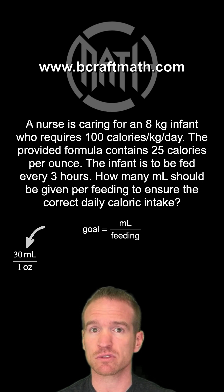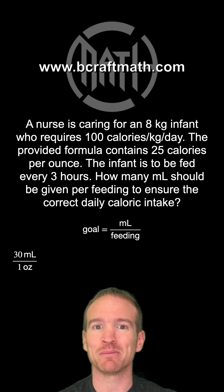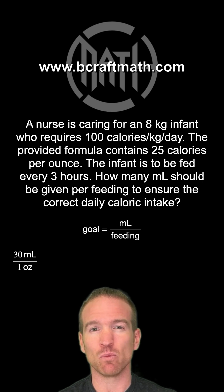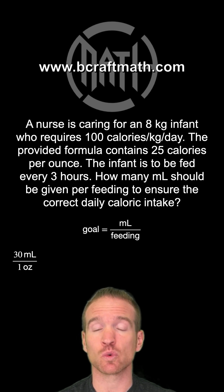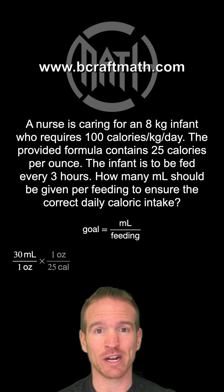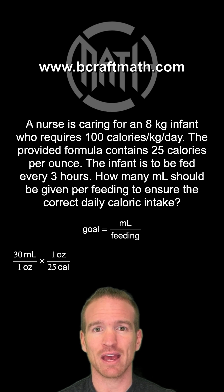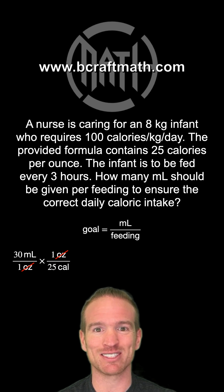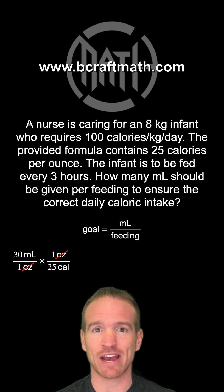We need to get rid of ounces, and our problem does talk about ounces. In one ounce of that formula there are 25 calories, so one ounce over 25 calories. Ounces cancel out. Now we need to get rid of calories. Our problem mentions calories again — do not repeat the 25 calories.